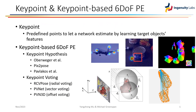Within the field of computer vision, keypoints are predefined points or pixels used to represent distinctive features of target objects. This concept is frequently employed for feature expression and representation in diverse tasks, including object and skeleton detection. In recent 6D pose estimation methods based on machine learning, two keypoint-oriented categories emerge: keypoint hypothesis-based methods and keypoint voting-based methods.